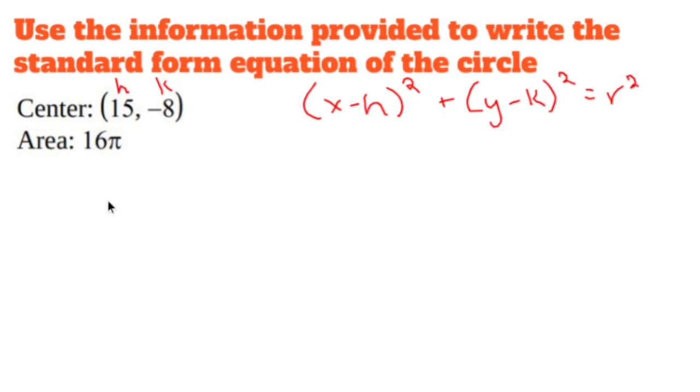That the area of a circle is pi r squared. So the area of my circle is 16 pi. So 16 pi is equal to pi r squared.